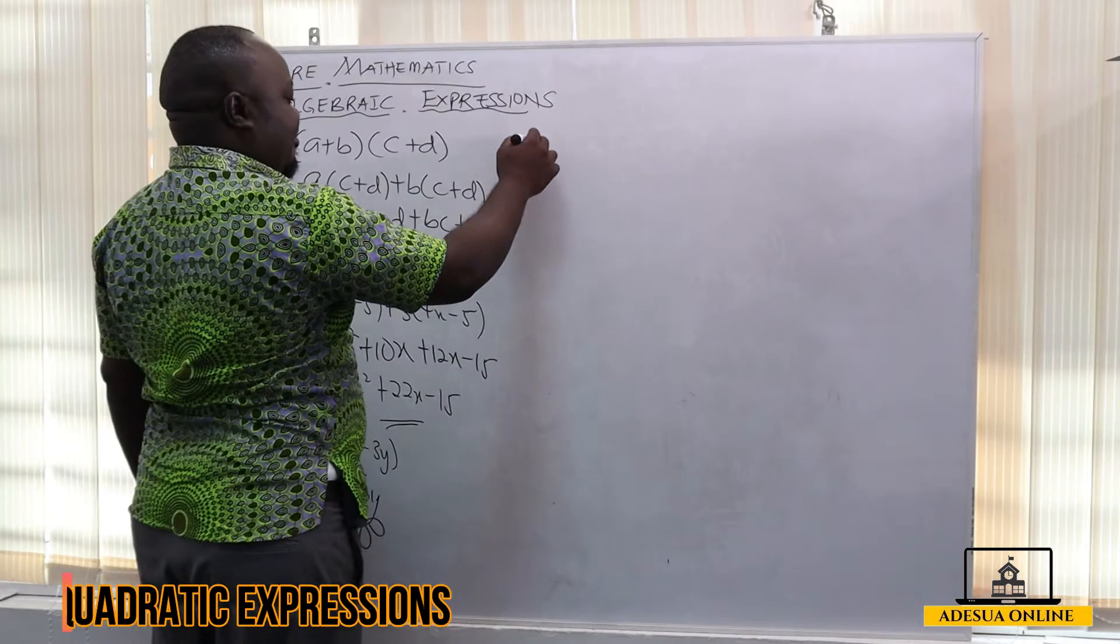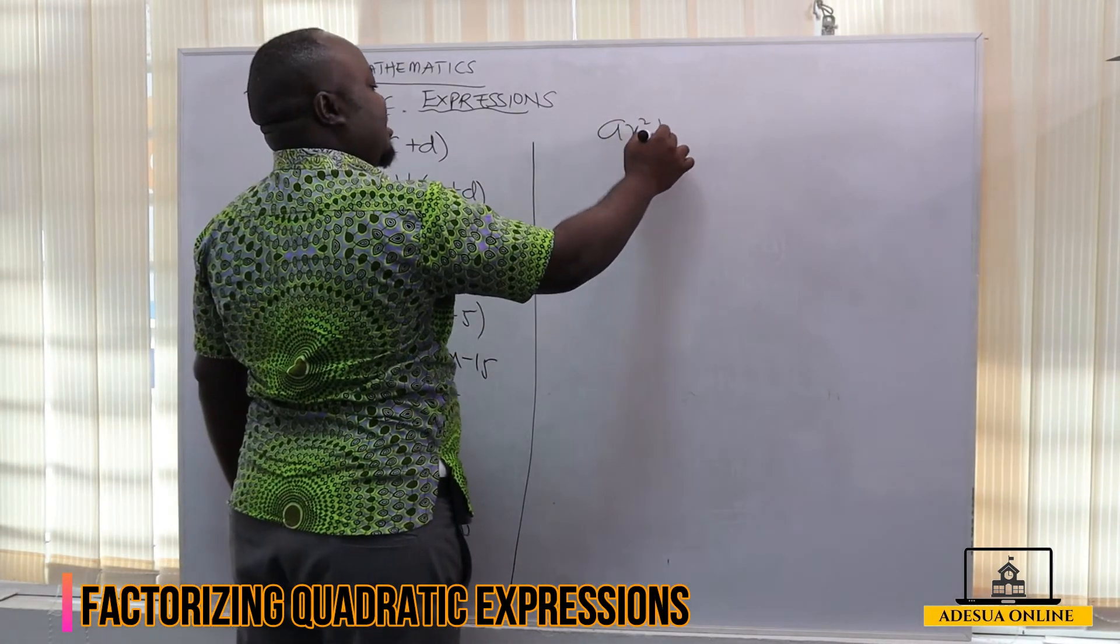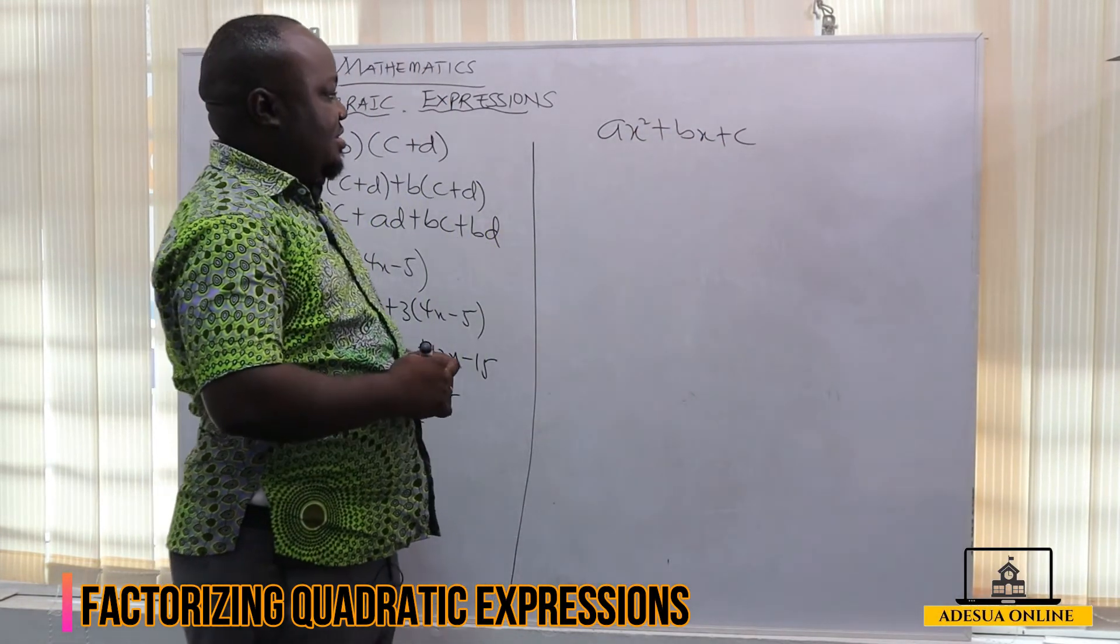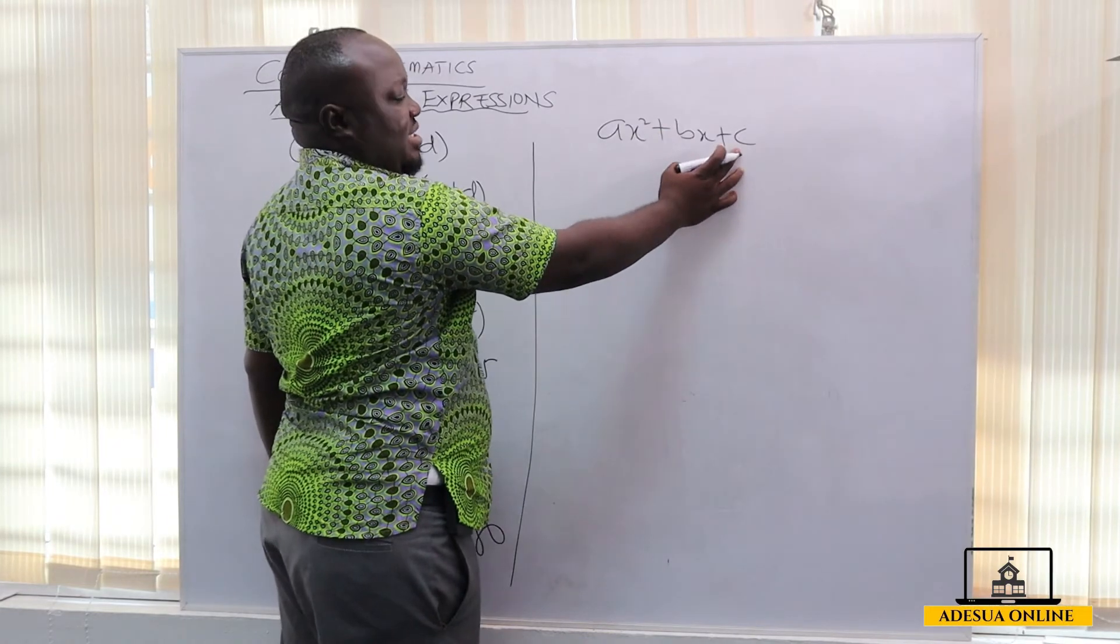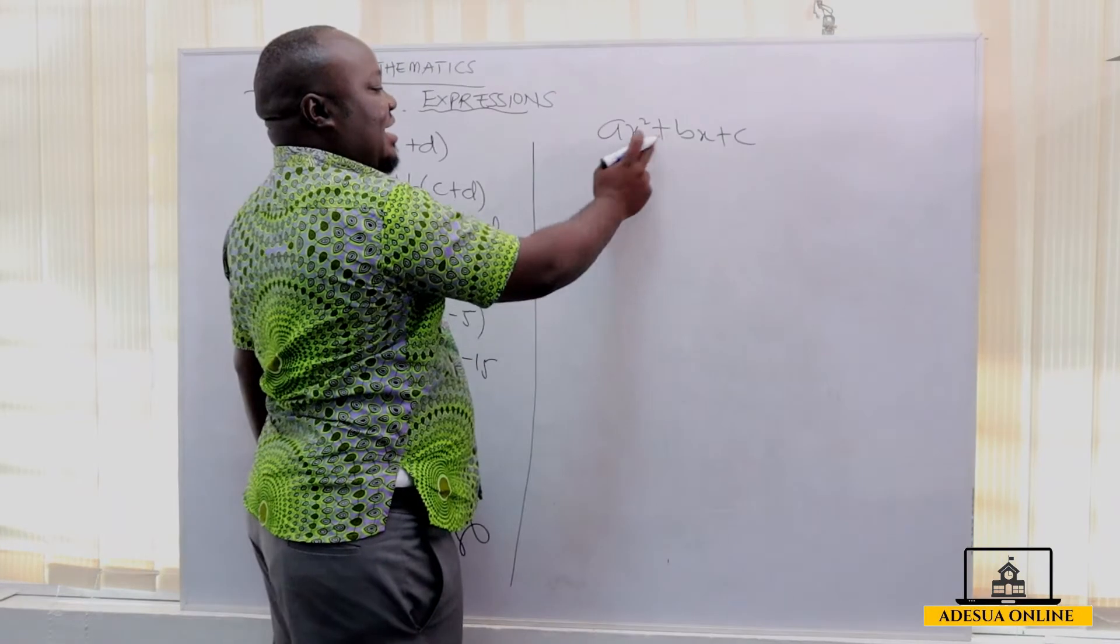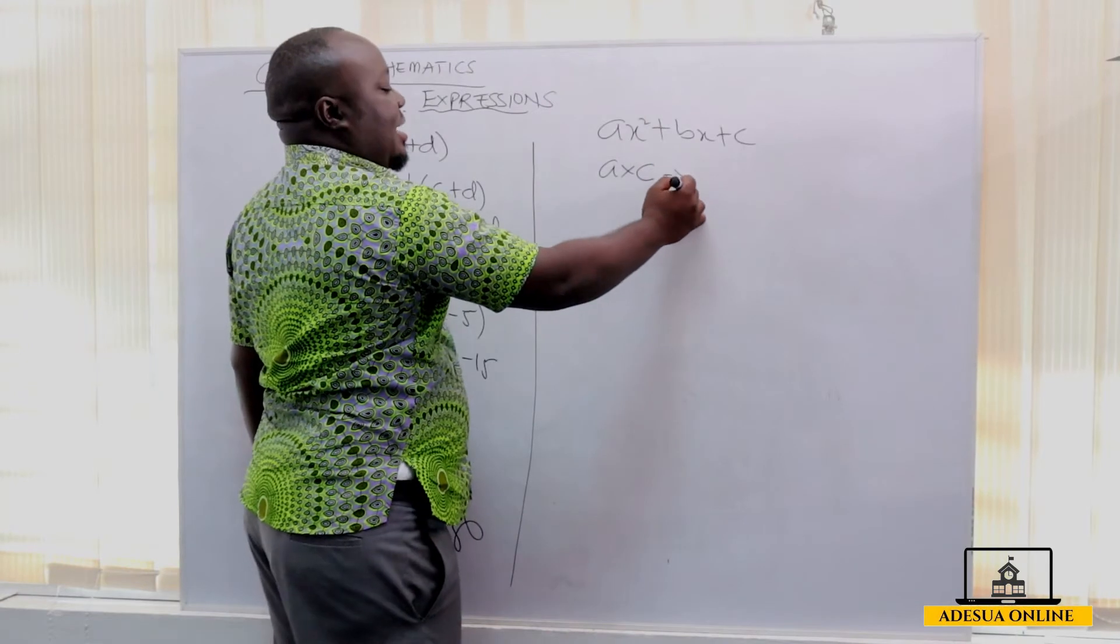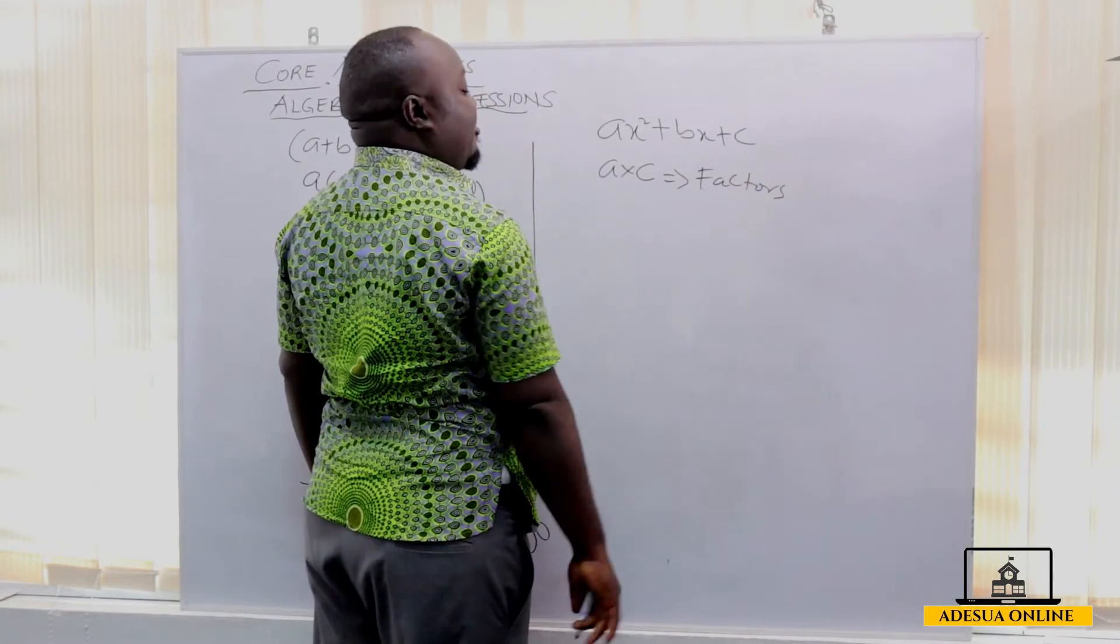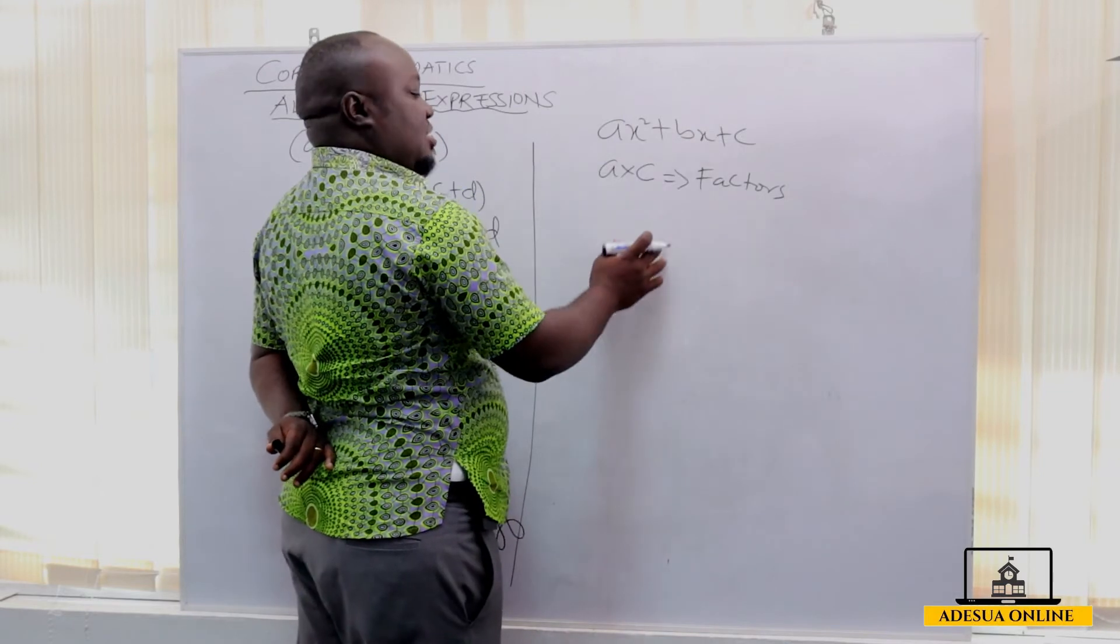Now let's assume we are going to factorize any quadratic expression of the form ax squared plus bx plus c. Now if I want to factorize this expression, normally what happens is we are going to multiply the a times c. The constant term is c over here and the coefficient of x squared is a. So if I should multiply a times c, I'll have a times c. Now I look for factors of this number, the factors of a times c. Now after looking for the factors, I look for a factor that when I add, I'm going to get b.